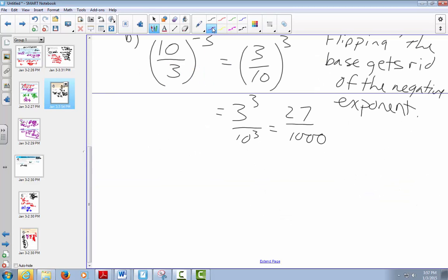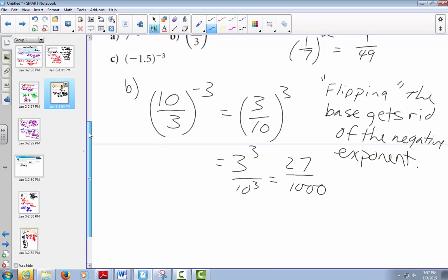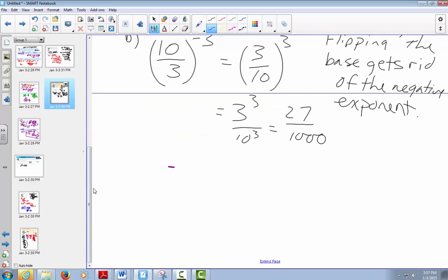C was negative 1.5 to the negative 3. I'm going to change this to a fraction to make our life easier. That's negative 3 over 2 to the negative 3. Flip the base, but don't get rid of the negative. So that means I have negative 2 over 3 to the power of 3.